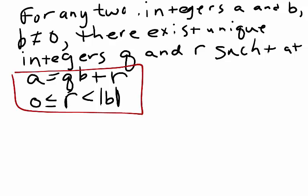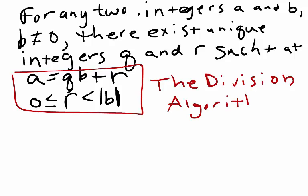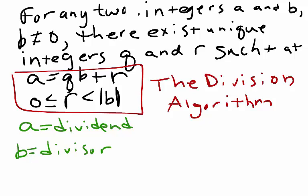This is called the division algorithm, where A is our dividend, B is our divisor, Q is our quotient, and R is the remainder.